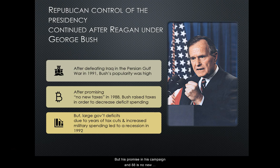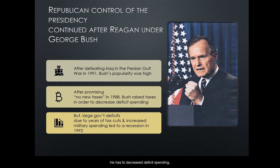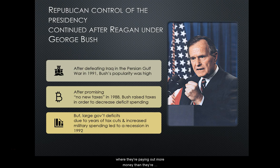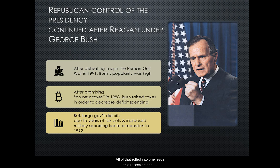His promise in his 1988 campaign is no new taxes, so he's promising the American people he's not going to raise their taxes. At this point, he has to. He has to decrease deficit spending, which means the government is in a situation where they're paying out more money than they're bringing in, which causes a deficit. All of that rolled into one leads to a recession, or a downturn in the economy, by 1992.